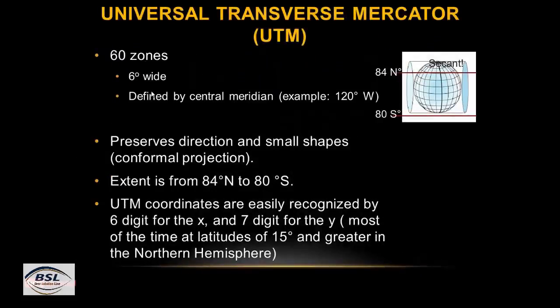This projection system is called UTM — Universal Transverse Mercator. It divides the whole globe into 60 zones, and each zone is 6 degrees wide. Each zone is defined by a central meridian from which we measure to the right and to the left. The extent is from 84 degrees north to 80 degrees south.